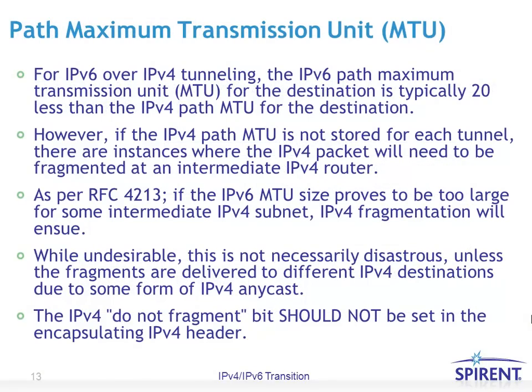Regarding the PATH maximum transfer unit, one might assume IPv6 packets will not exceed the typical MTU of IPv4, especially since IPv6 has a default MTU of 1280 and most IP packets are carried over Ethernet links with an MTU of up to 1500. However, since PATH MTU information is not stored for the tunnels, accommodation must be made for packets potentially exceeding the MTU of a particular link. As per RFC 4213, if the PATH MTU is too large for some intermediate IP subnet, IPv4 fragmentation will ensue. When encapsulating an IPv6 packet inside IPv4, the do-not-fragment bit should not be set in the encapsulating IPv4 header.